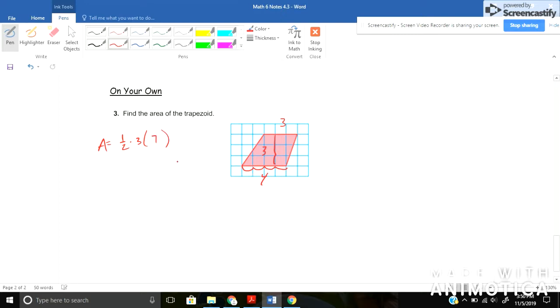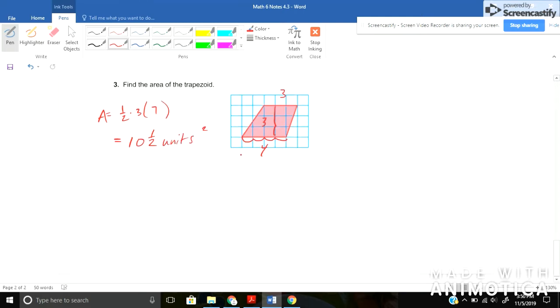For that. Okay, so when I do that, seven times three is twenty one, half of twenty one would be ten and a half. Since there's no label there I would say units squared. Okay, let me know if you have any questions on trapezoids and I would be happy to help. I will see you next time for 4.3 extension.